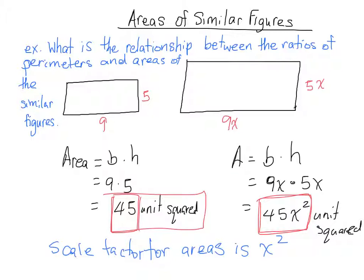The original question was, what is the relationship between the ratio of the perimeters? And remember that the perimeter is just a dimension, like 9 by 5, or 9 plus 9 plus 5 plus 5. Those are just dimensions just like the 9 and the 5.